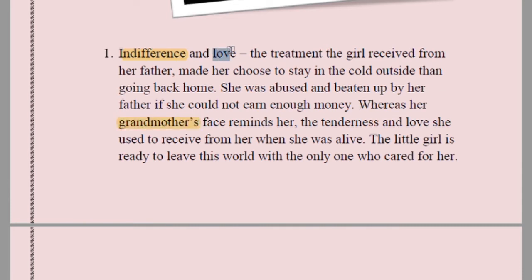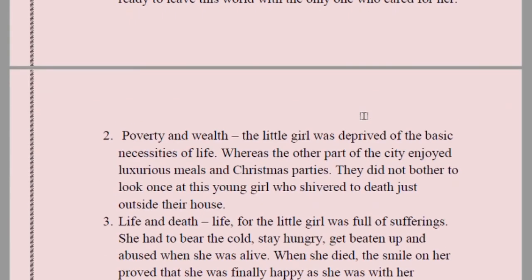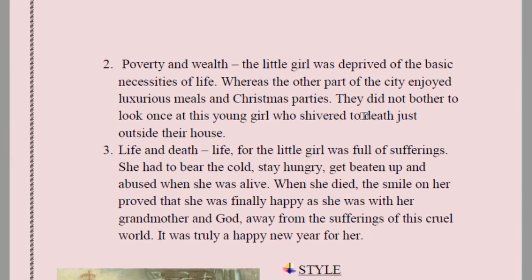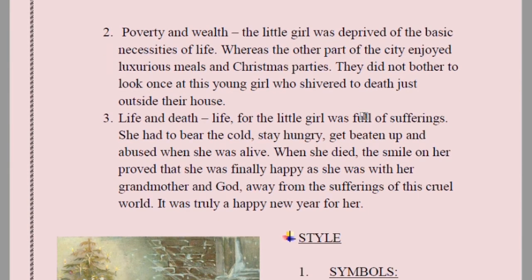People in the Victorian era were apathetic — they did not feel for the other class, did not feel how bad a life they were leading. Sympathy and empathy are important. With these contrasting images we grow sympathy and empathy within us. Second contrasting image: indifference and love. The treatment from her father made her choose to stay in the cold outside rather than go back home.